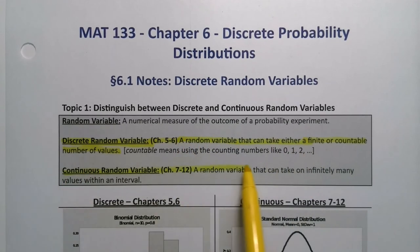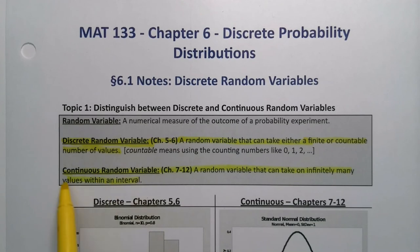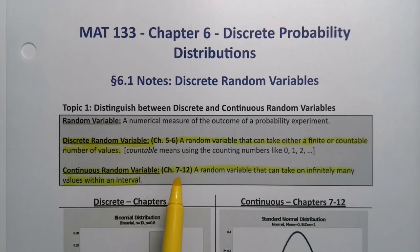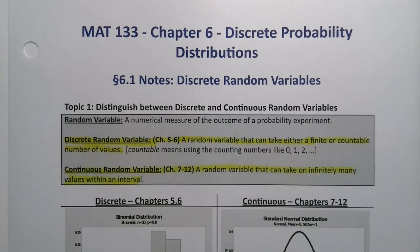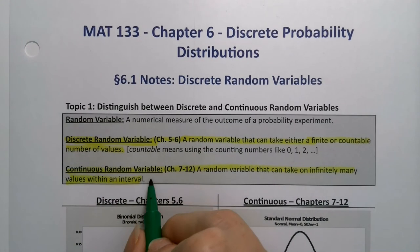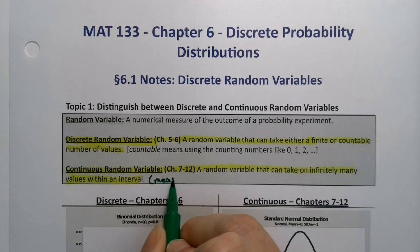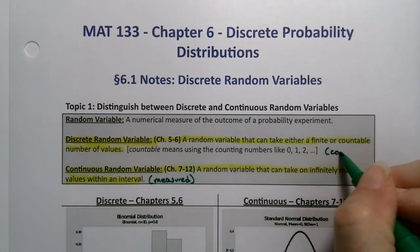So as opposed to continuous random variables, which we are going to work with a lot. After this chapter is over, we will focus almost entirely on continuous random variables, which are random variables that can take on infinitely many values within an interval. If you remember, these are the ones that are measured because that definition portion is still true. And these are the ones that are counted.